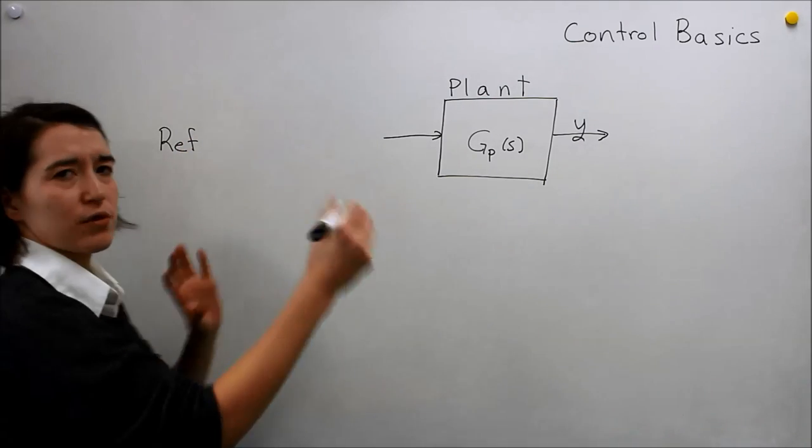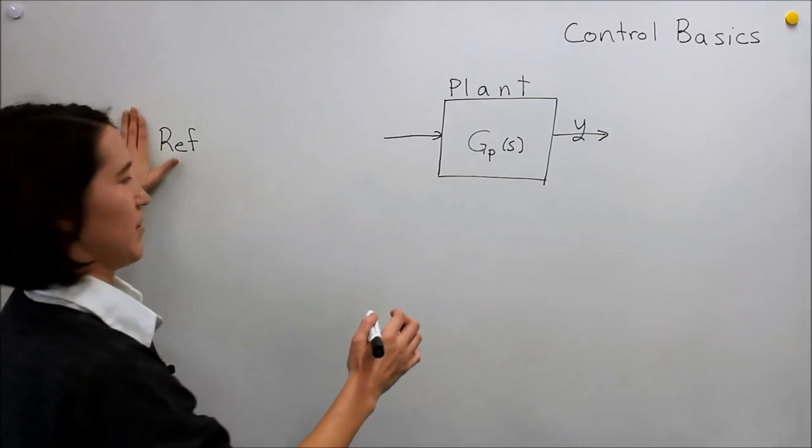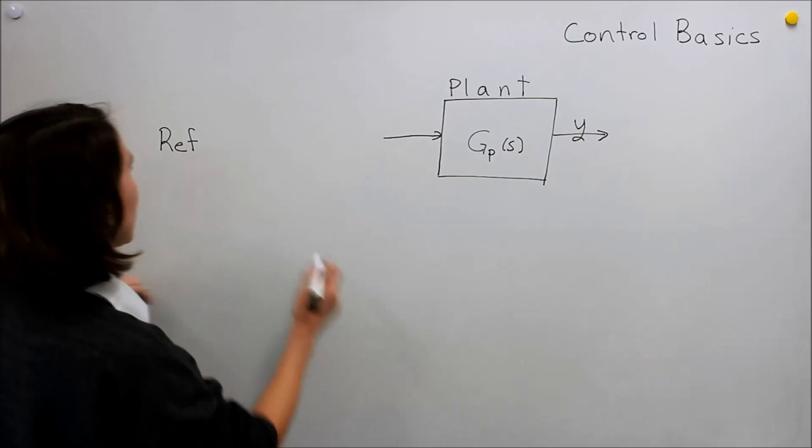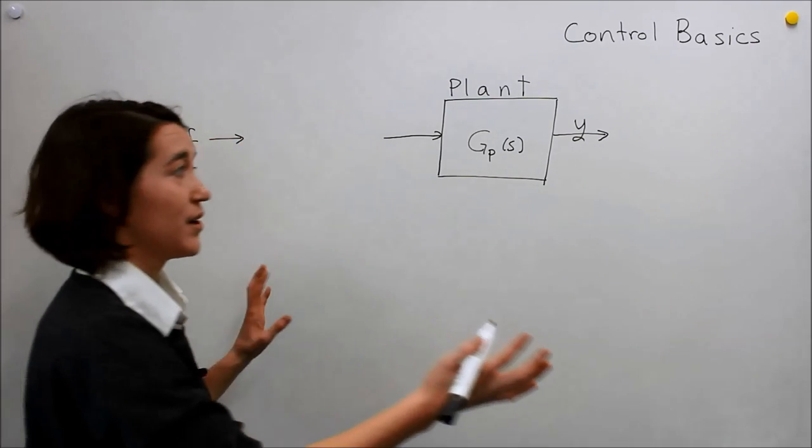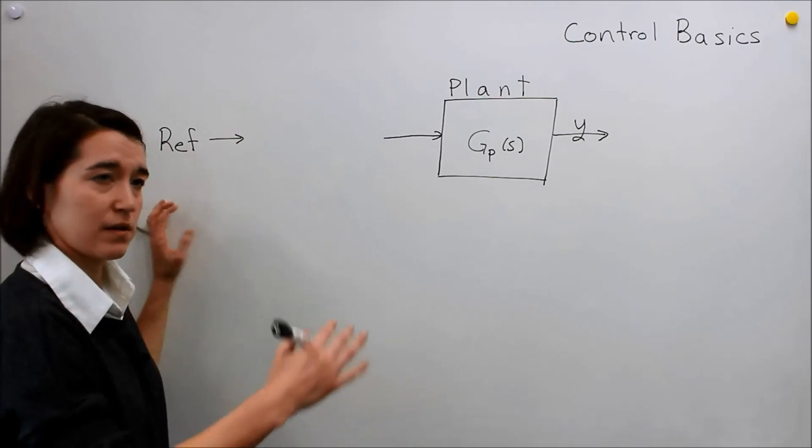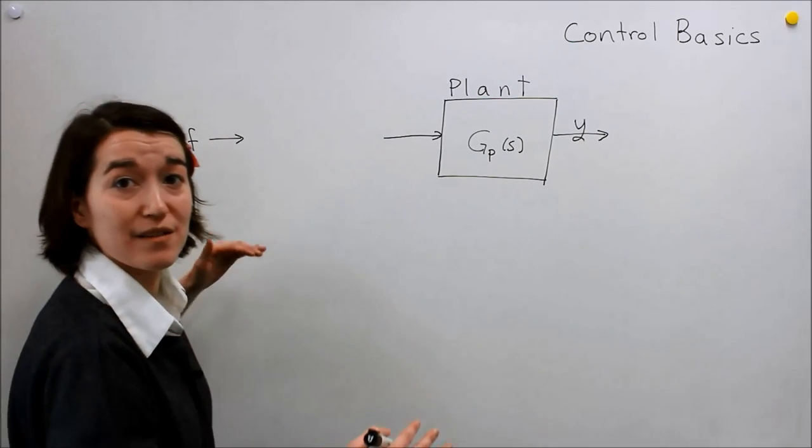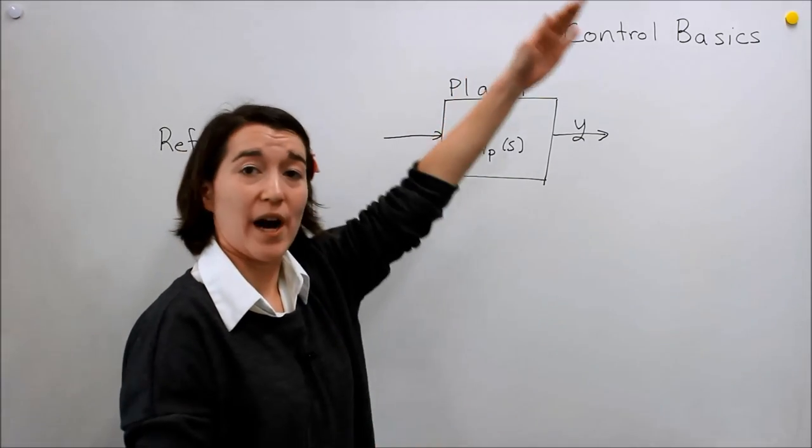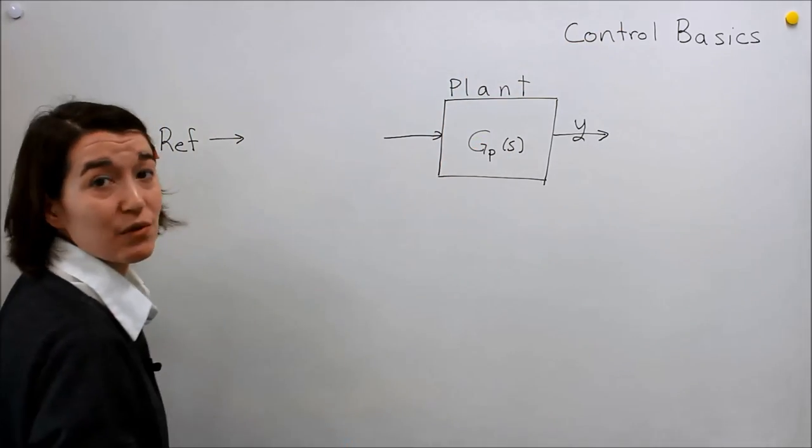If it's a voltage or current you usually put like IREF or VREF here. For now we'll just call it the reference. There's a reference value. And generally we'll assume that it's a constant. But this constant can also change depending on, you know, you're changing your system, you want to fly to a higher altitude, you can change this reference.